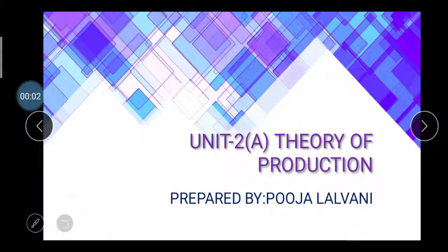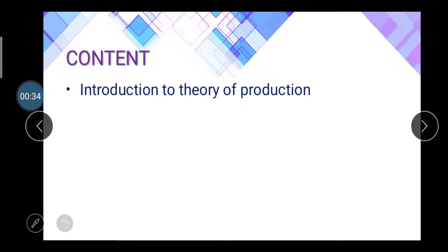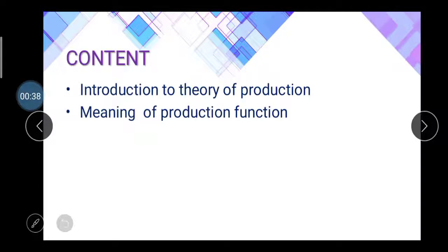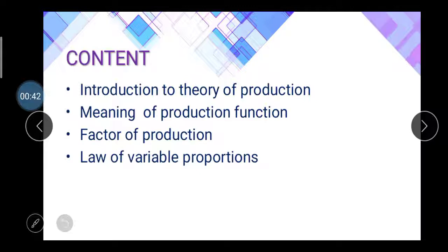Hello dear students, good morning. From this video lecture we are going to start Unit Number Two. Unit Number Two is divided into three parts. The first part is the theory of production. The five topics in Unit Two Part One are: introduction to theory of production, meaning of production function, factor of production, law of variable proportion, and law of returns to scale.